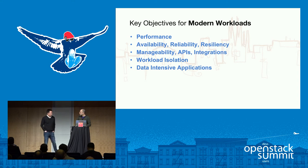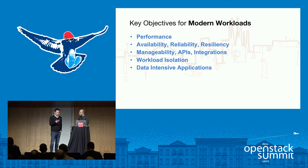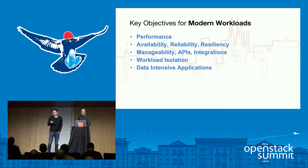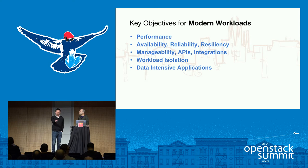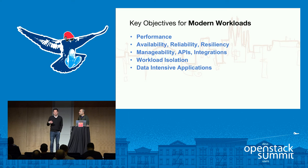How did we come about these objectives? These clear functional requirements were developed by our team deploying in Amazon first. There are optimization constraints when deploying in Amazon — you have to understand instance size, volume IOPS, and optimize for cost. Having our teams architect in Amazon and understand clear functional requirements, then bringing them back to us and letting us compete for a lower TCO has really helped us drive these key objectives.